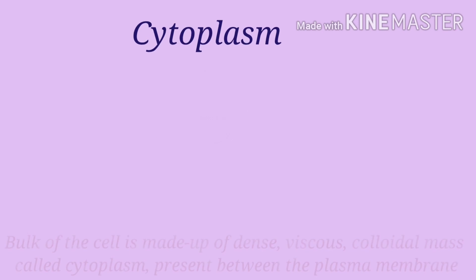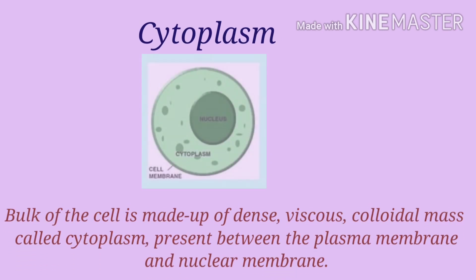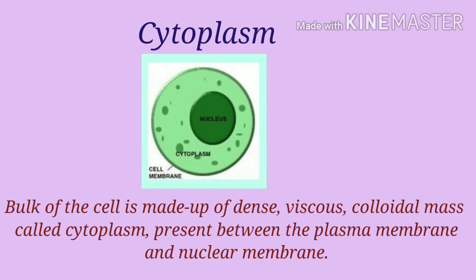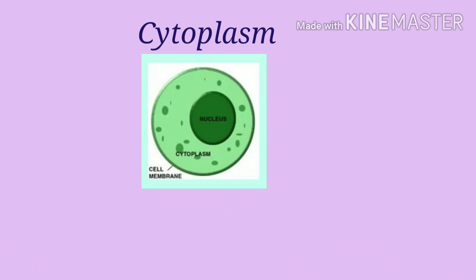My next topic is cytoplasm. Bulk of the cell is made up of a dense, viscous, colloidal mass called cytoplasm, present between the plasma membrane and nuclear membrane. Many organelles are embedded in the cytoplasm.